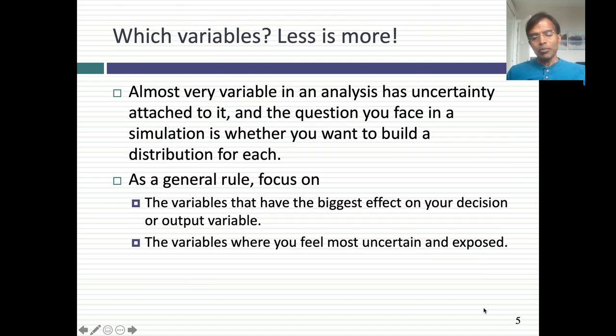Try to keep your model transparent in terms of what's happening under the surface. Opaque models that have black boxes that you can't look into are much more difficult to simulate than models where you can see the connections and try to build them into your simulation. One final decision you have to make: you might have a dozen independent variables and one output variable. Should you build a distribution for each one? You probably shouldn't. When you do a simulation, you want to focus on the variables that matter the most - the variables that have the biggest effect on your output variable and the variables we feel most uncertain about.